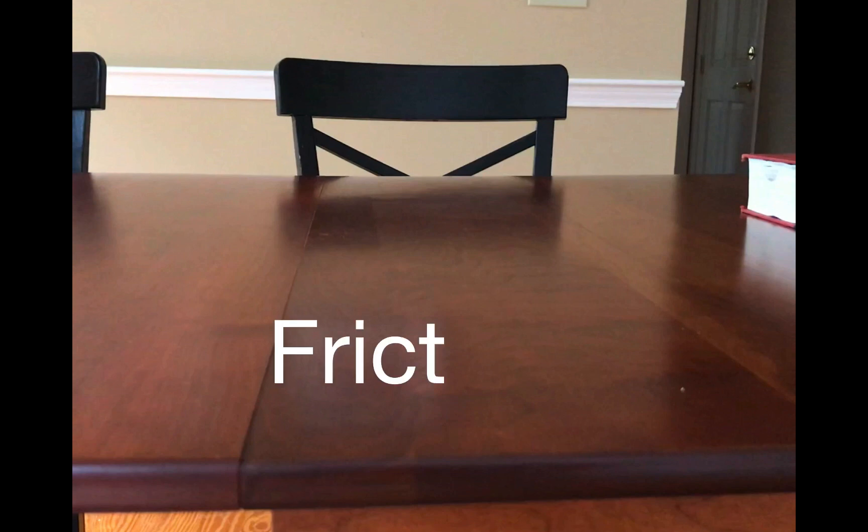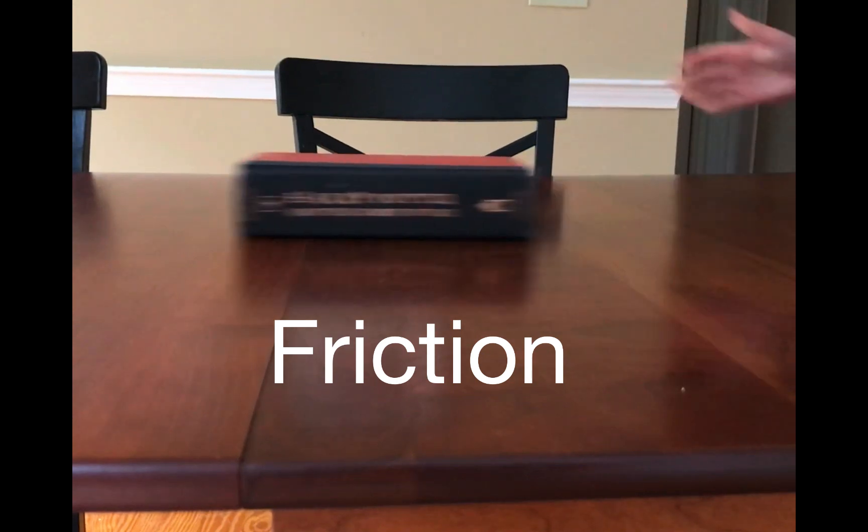This is a movie about friction. Friction is a force that arises when two surfaces try to slide over each other. This is the force that causes this book sliding across the table to come to a stop.